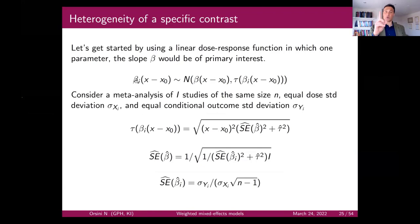We have a regression coefficient — it could be the slope of a line — and then there is a certain contrast of interest: X relative to X₀. This comparison does not need to be observed in any of the single studies.